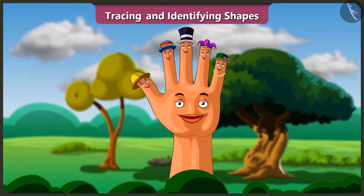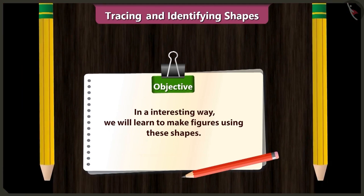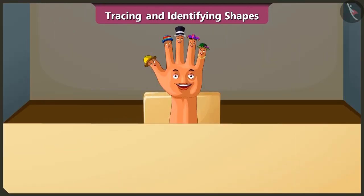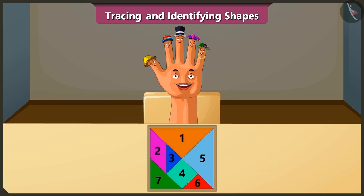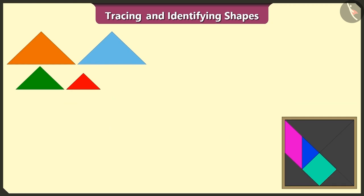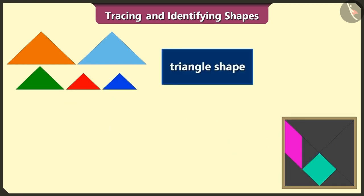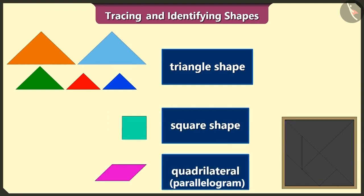Friends, we have learned to identify and trace shapes. Today we will learn to make figures using these shapes. This is a tangram — there are a total of seven shapes in it: one, two, three, four, and five triangle shapes, one square shape, and one quadrilateral.